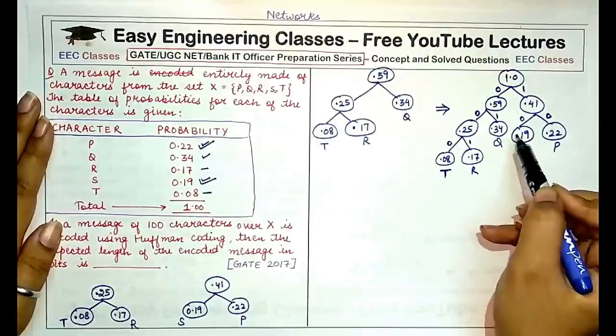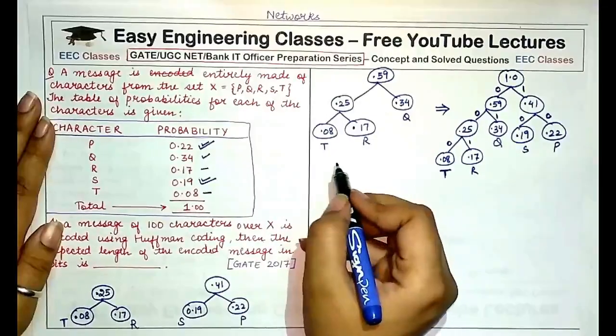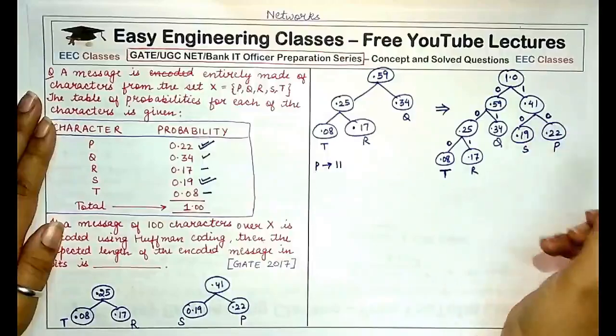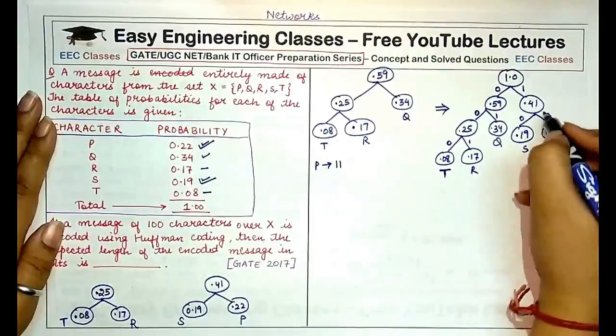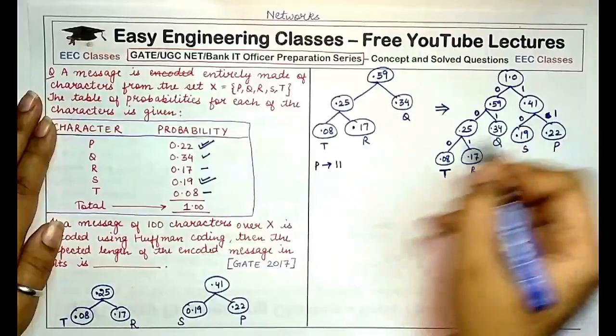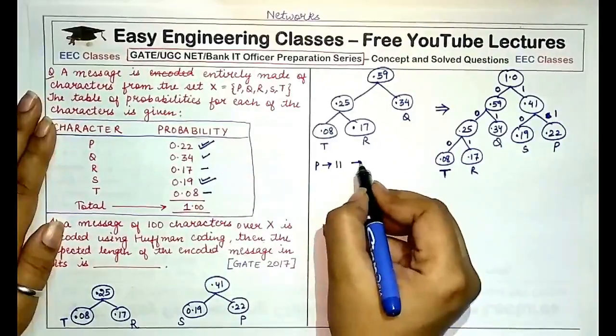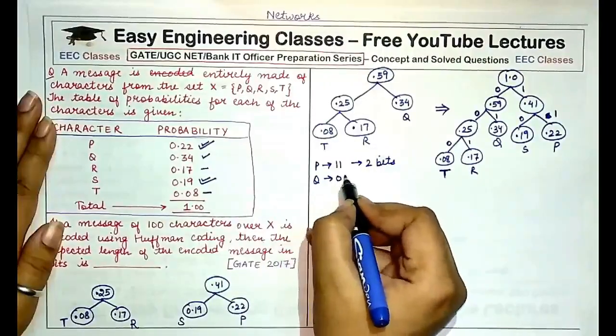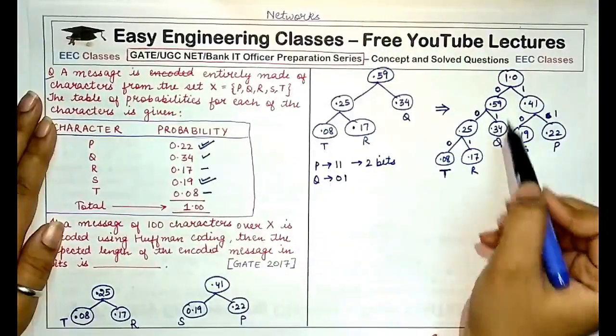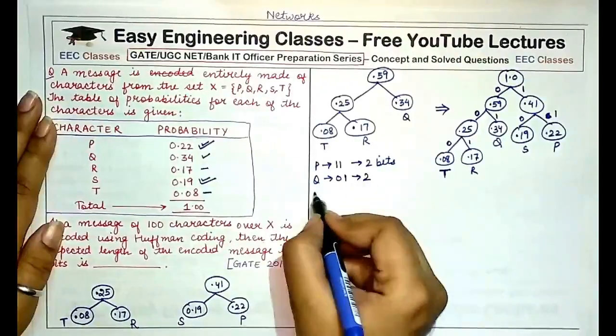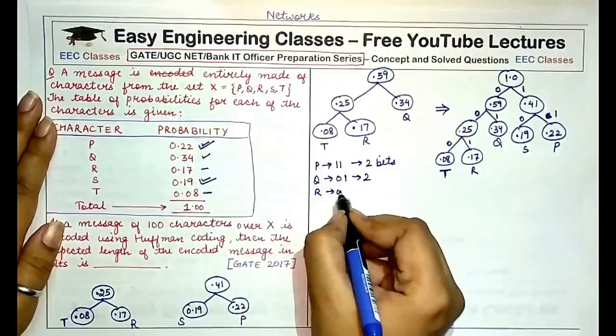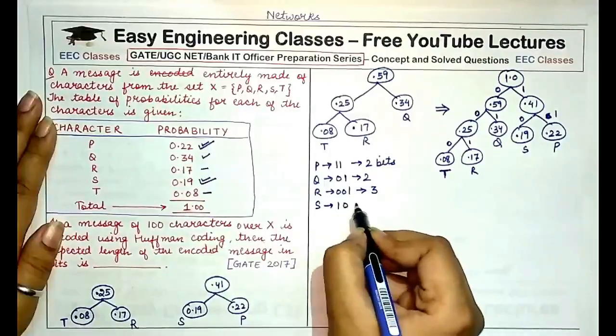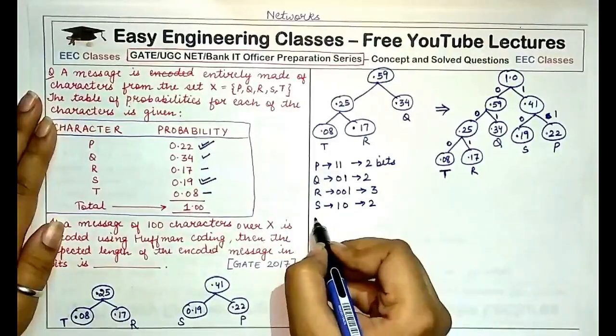So P would be assigned the code of 1, 1, which is 2 bits. Q would be 0, 1, which is 2 bits. R would be 0, 0, 1, which is 3 bits. S would be 1, 0, which is 2 bits. And T would be 0, 0, 0, which is 3 bits again.